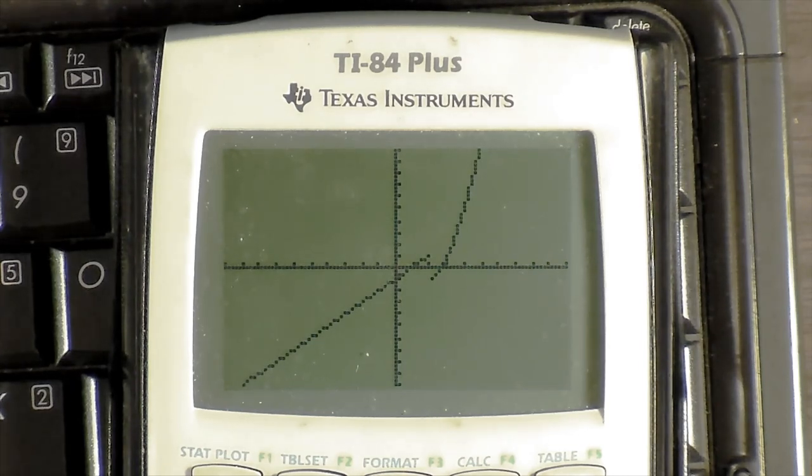When we plot the pieces together, we see a break in the function. You might recognize that as a jump discontinuity.